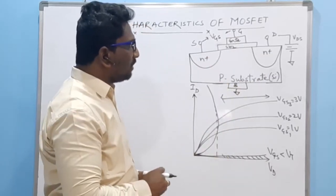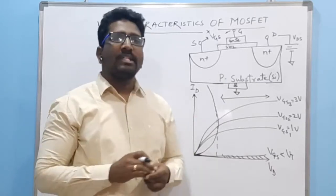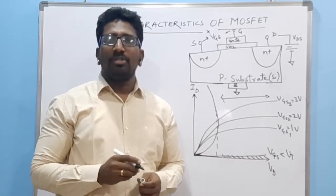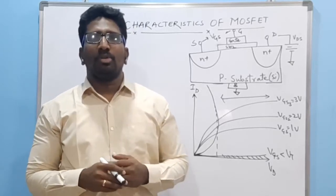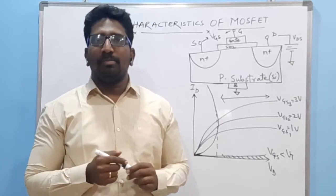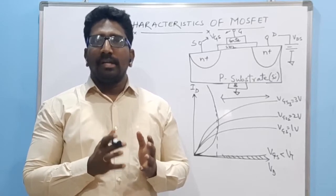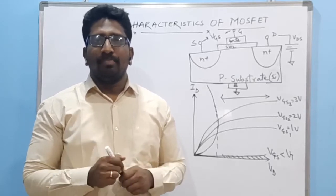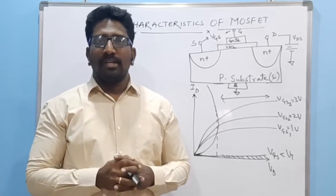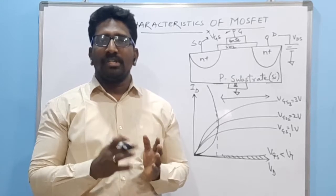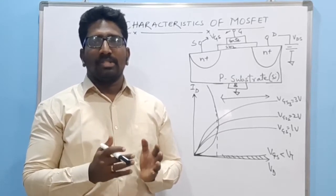To understand the working condition of a MOSFET, it is very important to know its VA characteristics. The VA characteristics describe how a transistor works and what its main operating regions are. There are three different modes: the cutoff region, the linear region, and the saturation region.